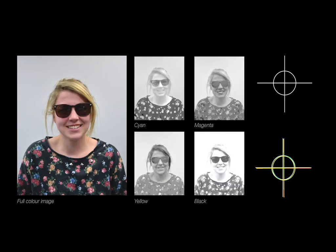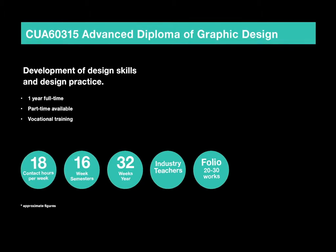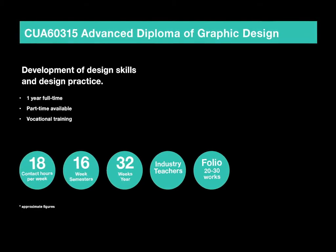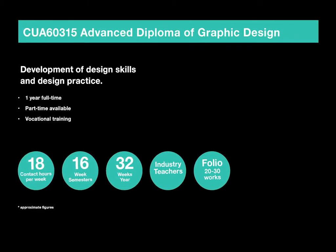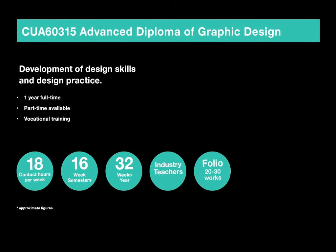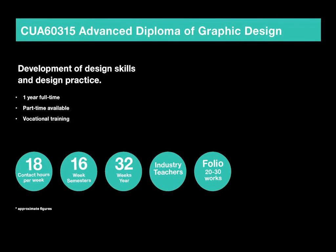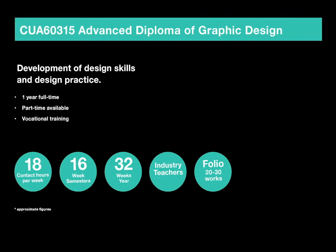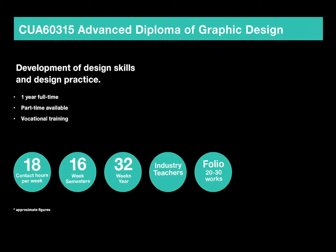That's all the work for the Diploma class. Moving on to the Advanced Diploma — it is a continuation of the Diploma. Some classes have the same name but are a continuation. It's again one year full-time, with part-time available. There are a few fewer class hours during the week but we still run for 32 weeks.